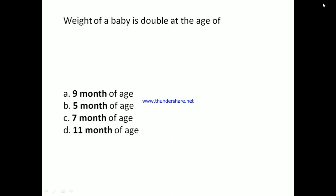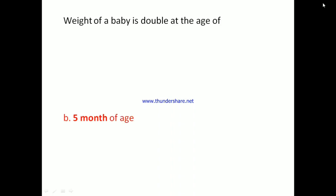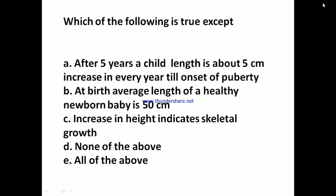Weight of a baby is doubled at the age of which of the following? A: Nine months, B: Five months, C: Seven months, D: Eleven months. The answer is B: Five months of age.